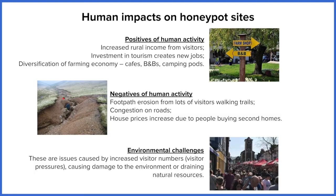We also have congested roads. Rural roads aren't designed for heavy traffic, resulting in traffic jams and people parking on grass verges, which in turn creates more erosion. And because it's such an idyllic place, many people want to own a second home there. That pushes up house prices, meaning locals struggle to actually afford a home in the area.